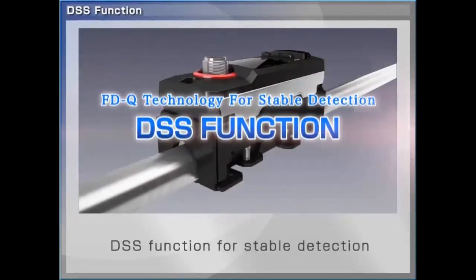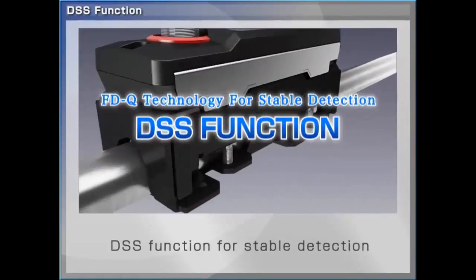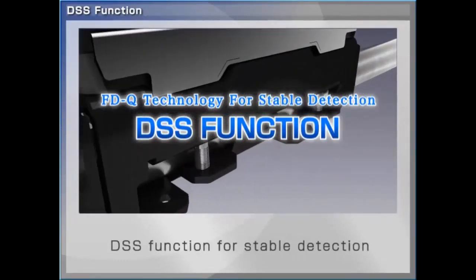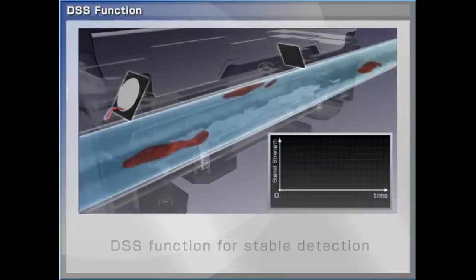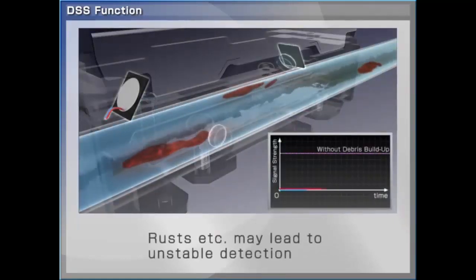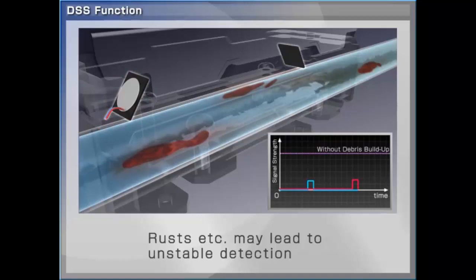Function that the FDQ utilizes for stable detection is the DSS function. Over time, debris or rust buildup inside of the pipe can lead to difficulty in signal transmission.